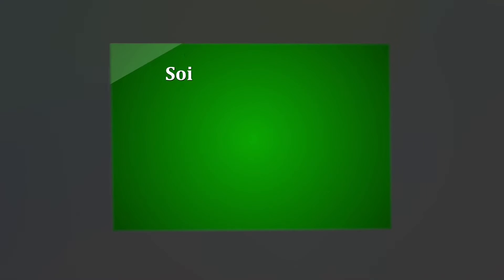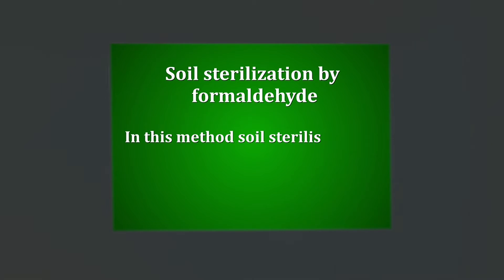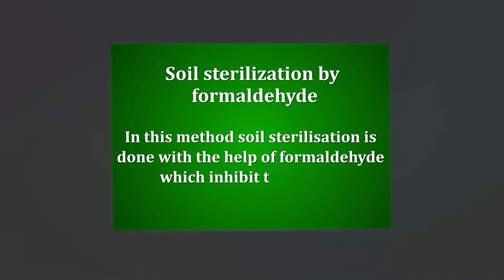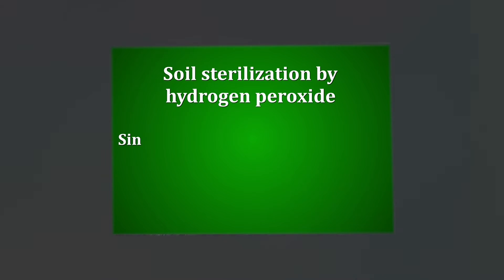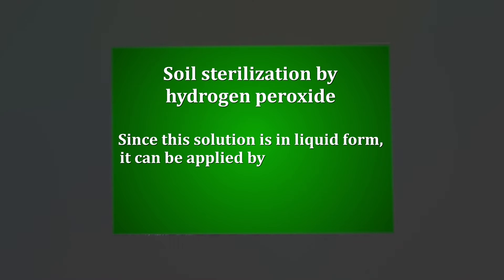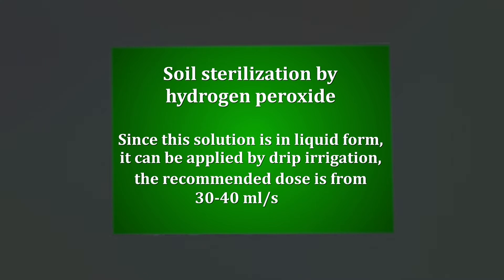The second method is soil sterilization by formaldehyde. In this method, soil sterilization is done with the help of formaldehyde, which inhibits the growth of living organisms. Third, soil sterilization by hydrogen peroxide. Since hydrogen peroxide is in liquid form, it can be applied by drip irrigation. The recommended dose is from 30 to 40 ml per square meter.